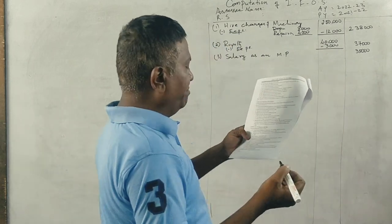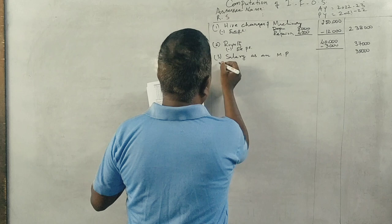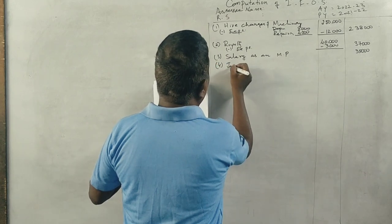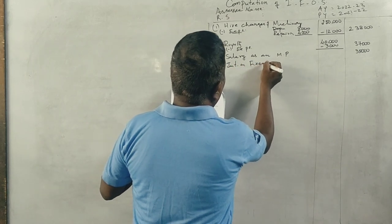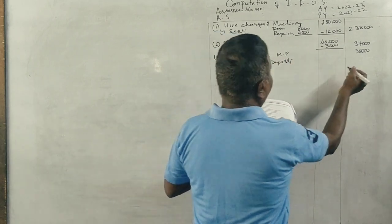Next is income from bank deposits, fixed deposits - income from other sources. Taxable interest on fixed deposits: Rs. 45,000.